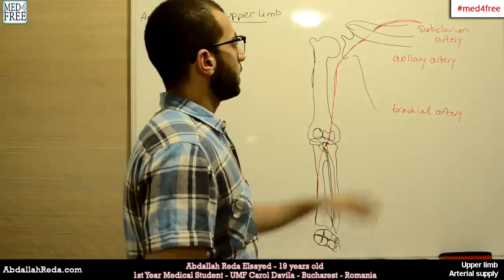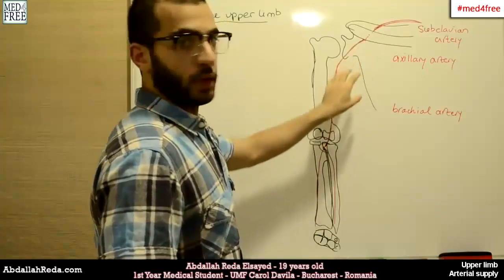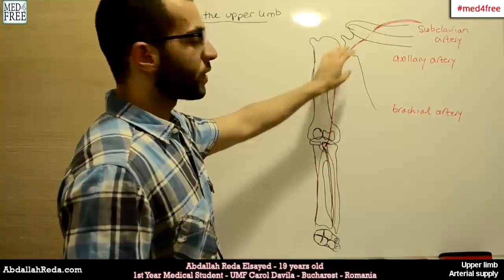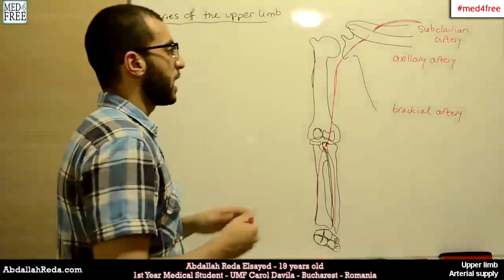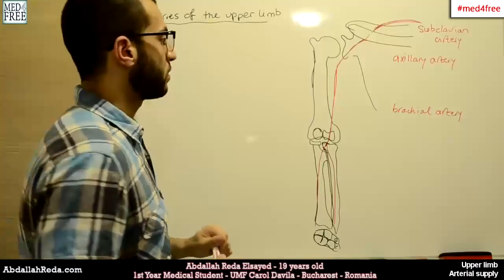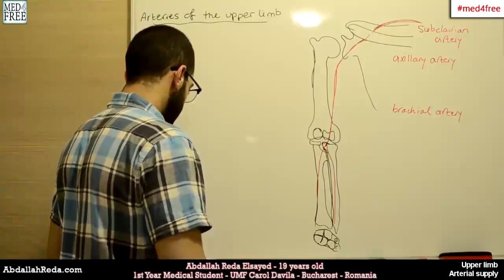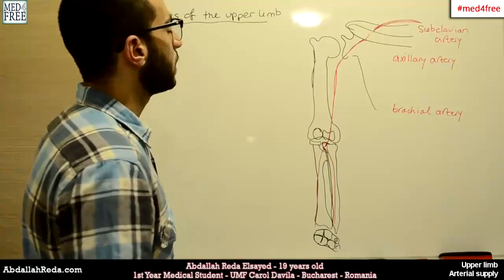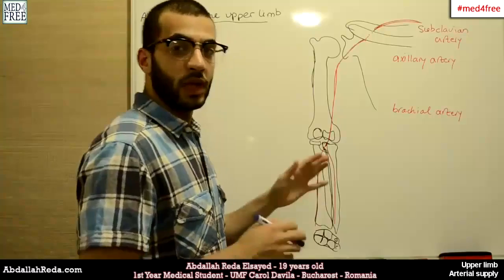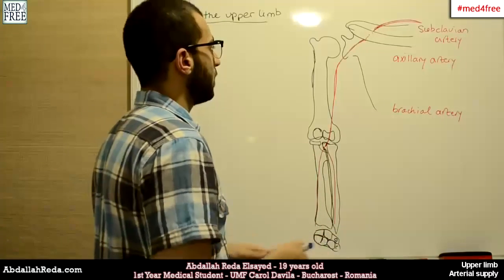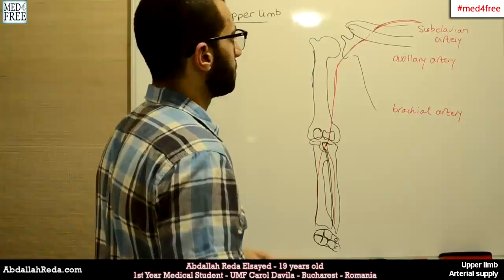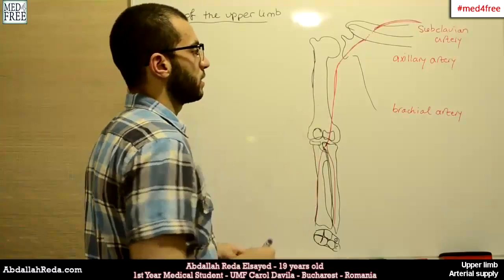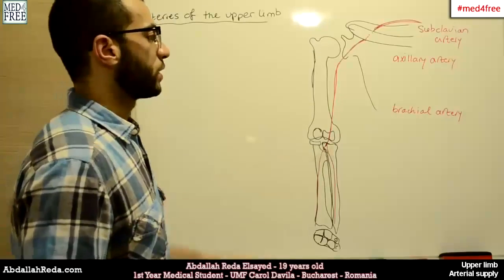Now, of course, at each region, each artery will give some branches and collateral branches, so we're going to go through that. I know the names are a lot and maybe a little bit confusing, but if we relate them to the regions where they are found, I think it will be easier to memorize the names or to identify which branch comes off which artery.